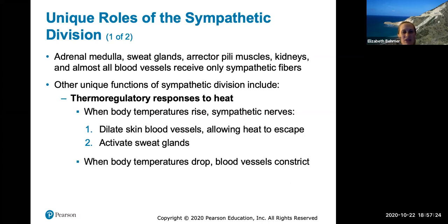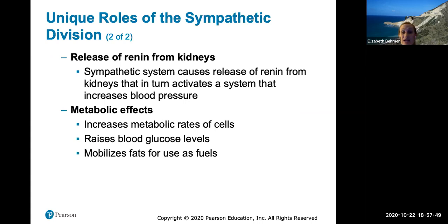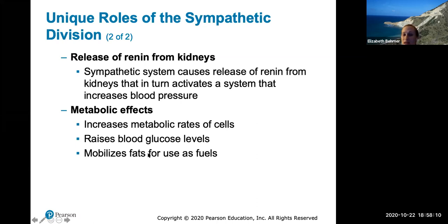Other unique roles of the sympathetic division: thermoregulatory responses — when body temperature rises, sympathetic nerves dilate skin blood vessels to allow heat to escape and activate sweat glands; when temperature drops, blood vessels constrict to conserve body heat. The sympathetic system also causes release of renin from the kidneys, activating a system that constricts blood vessels and increases blood pressure via angiotensin. Metabolic effects include increasing cellular metabolic rate, raising blood glucose levels, and mobilizing fats as fuel.